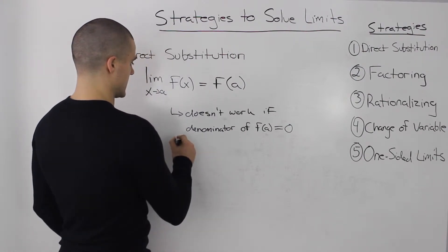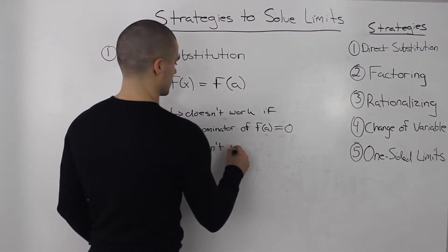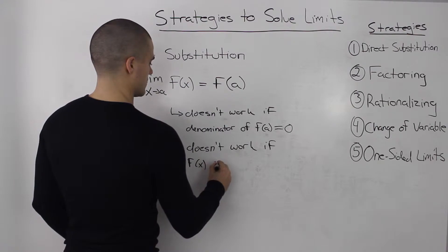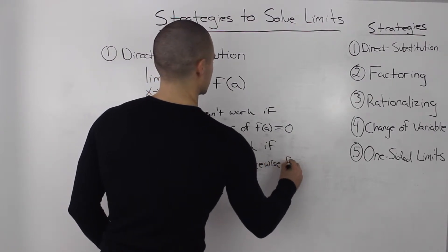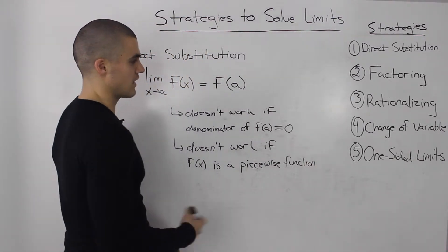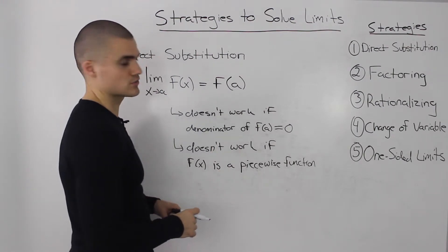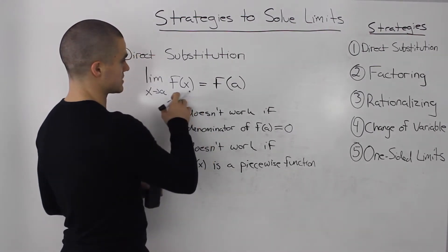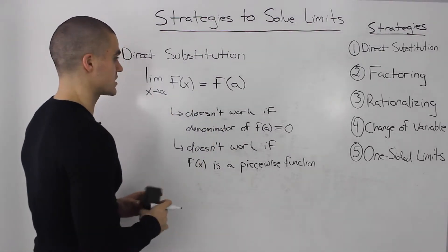This strategy also doesn't work if f(x) is a piecewise function. If it's a piecewise function, then we'll have to make a table of values for each piece, graph it, and then see visually whether the limit exists or not. But other than these two exceptions, if you get some kind of function where you could just directly plug in a and you get some value, the limit is just that value.